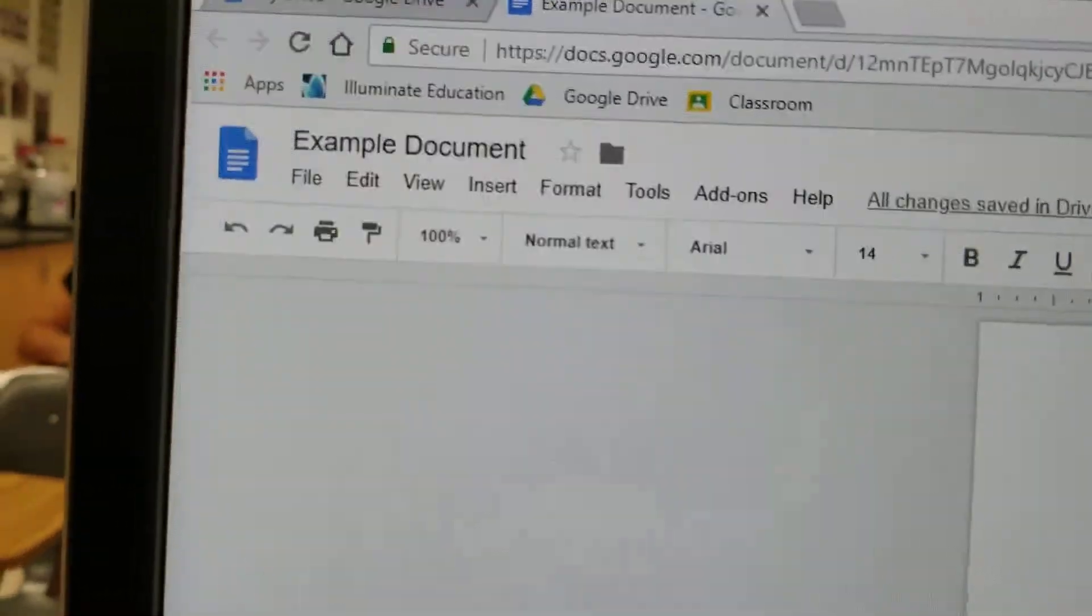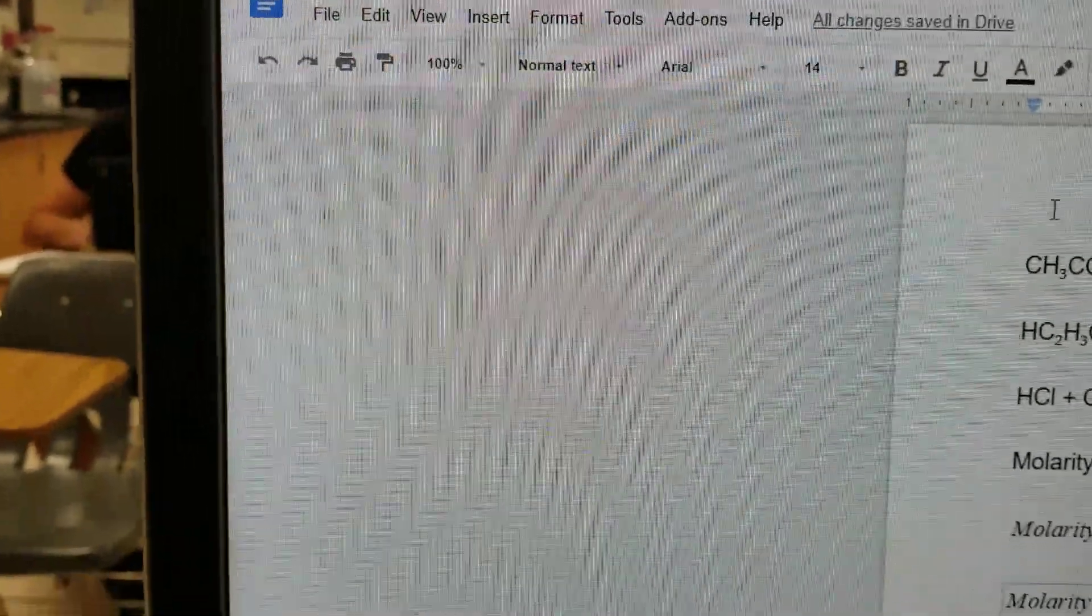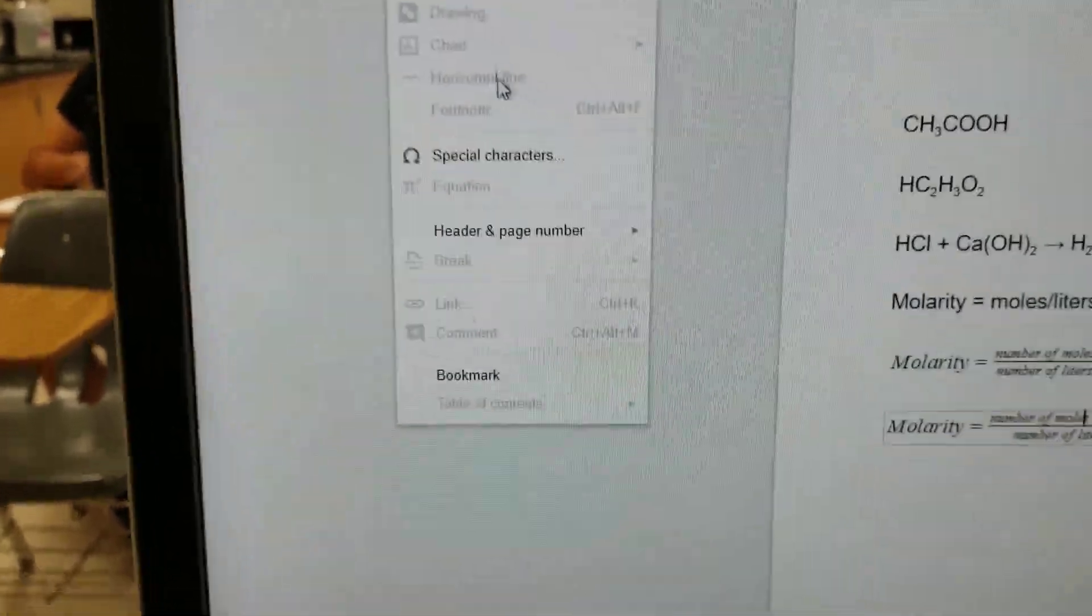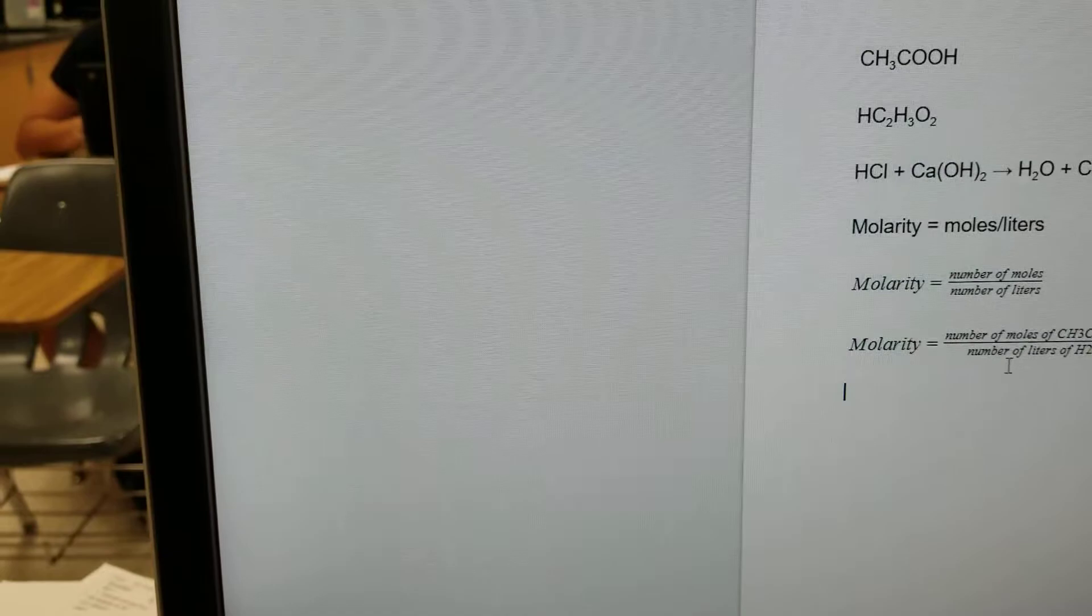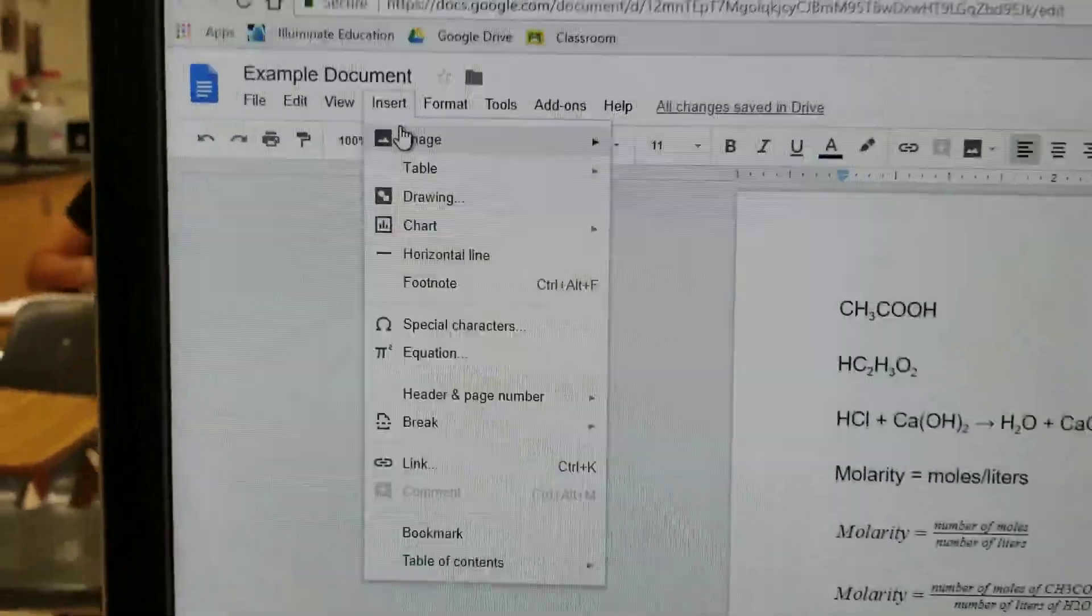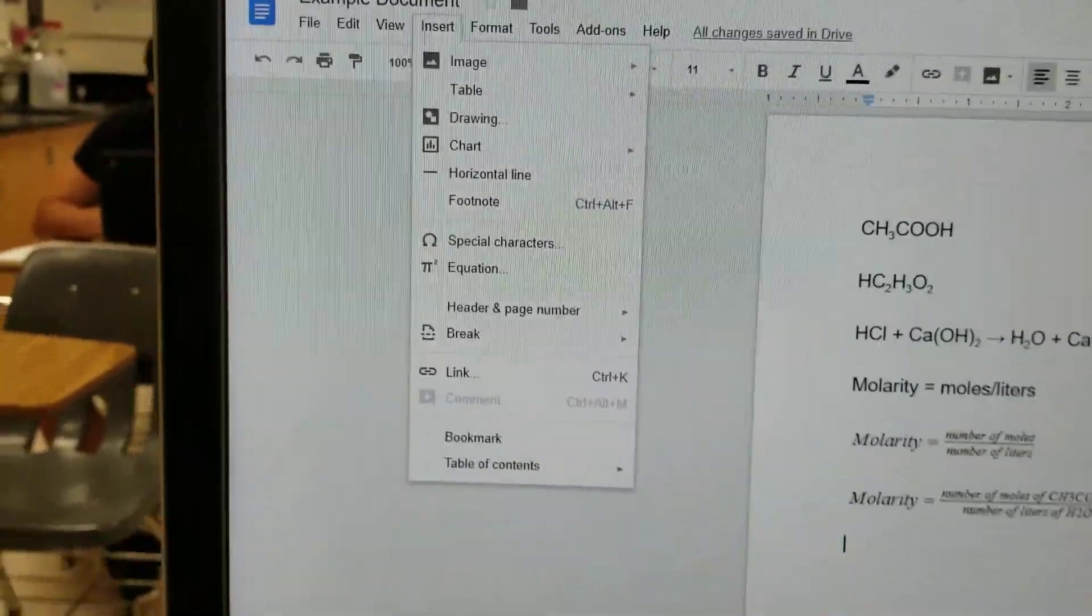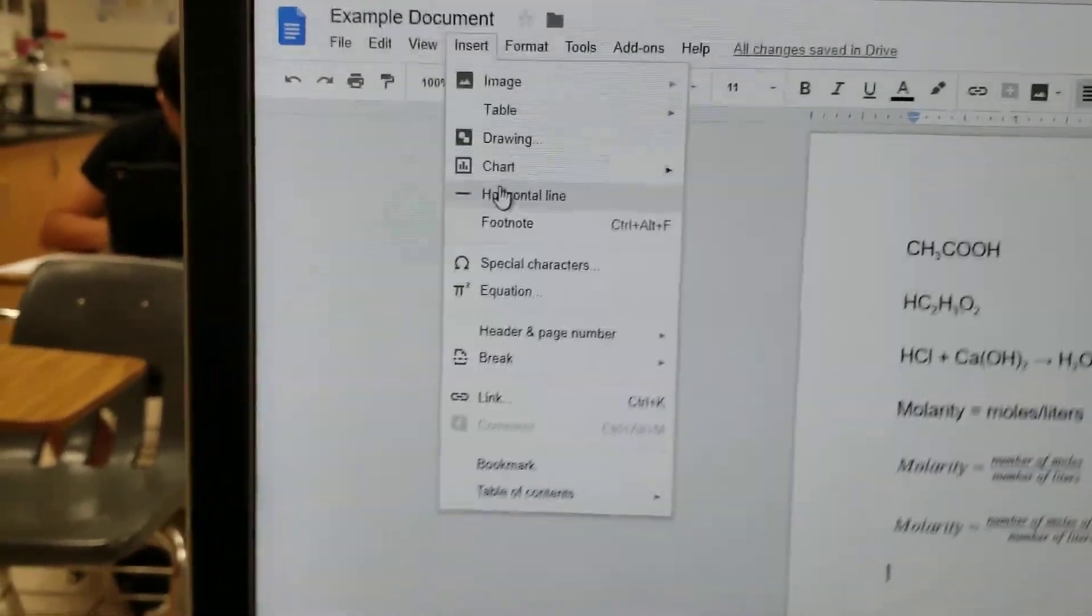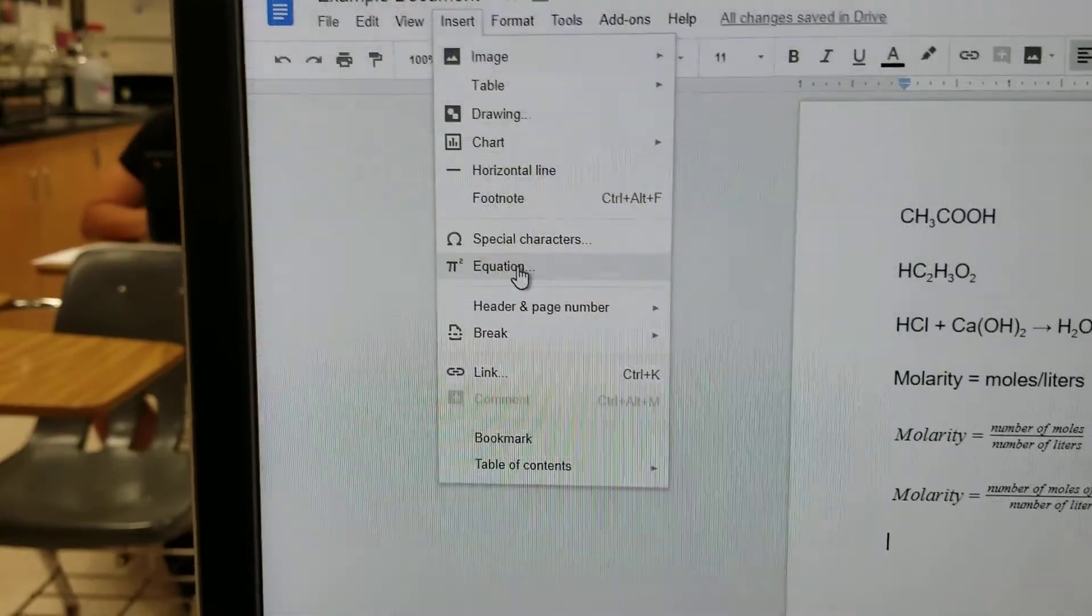In order to do that, what you do is you find in the menu up here, the place where you have the equation editor. So, there we go, let's see. It didn't show up immediately, so I clicked outside the equation.